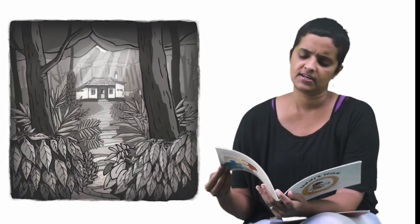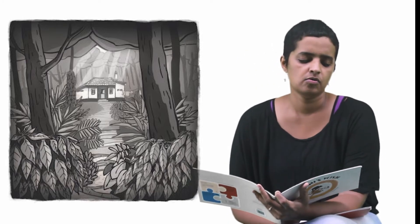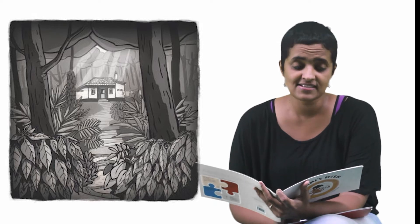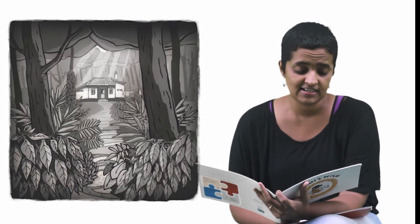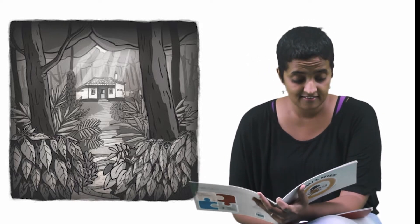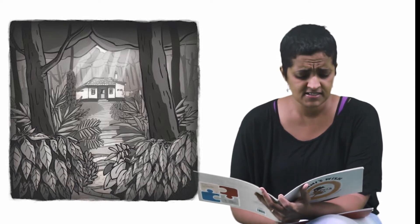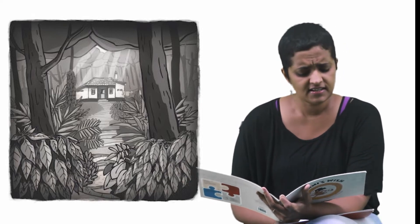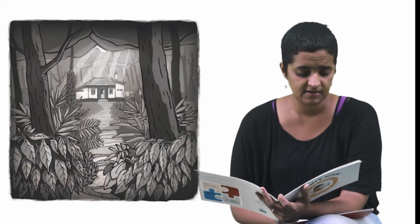Where do you live? Janaki Miss asks. In the forest Miss, beyond the coffee estate. Oho! Lights, fans, fridges and TVs need electricity to work. It sounds like your home doesn't have an electricity connection. But why? asks Unni. Electricity comes through wires from the village power station. Since you live deep in the forest, it's difficult for the wires to reach your home, replies Janaki Miss.